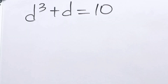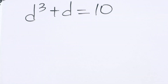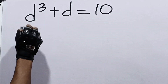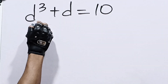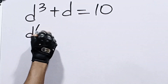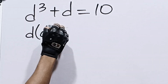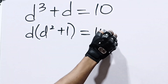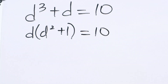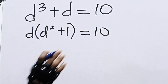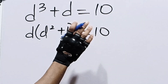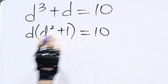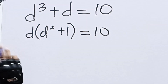Let's solve this together. It says d cubed plus d is equal to 10. How do you solve for d in this question? The first thing we can do is factor out d, so we have d times d squared plus 1 is equal to 10. Now, 10 is 5 times 2, so we can put 10 as 5 times 2 and equate it to this.